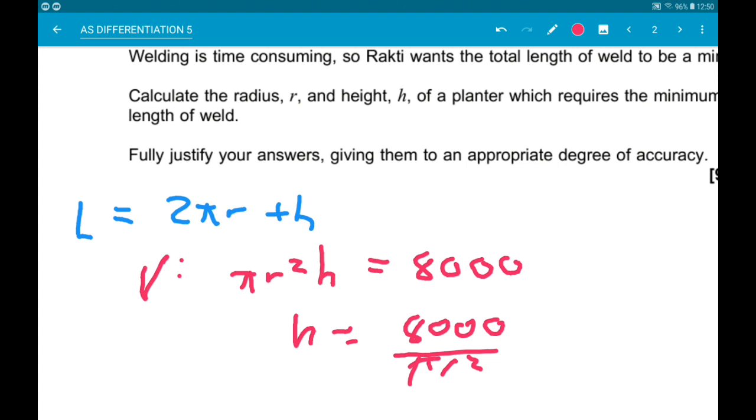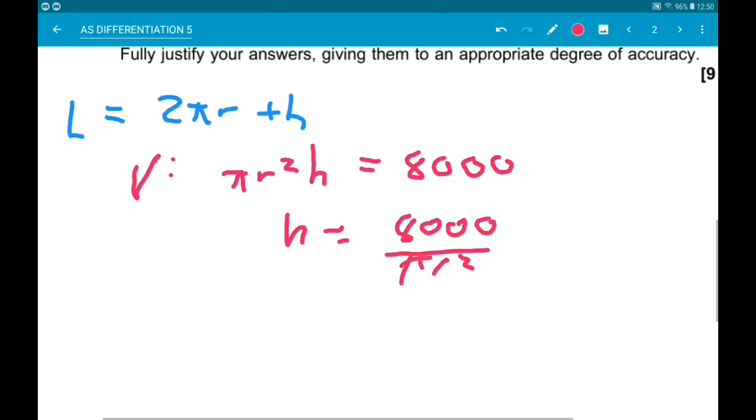Okay. Now we're going to substitute that into our expression for the length. So the length is now, in terms of R, 2πr add 8,000 over πr².